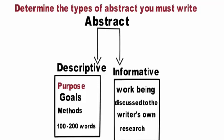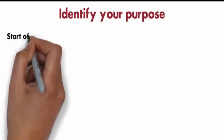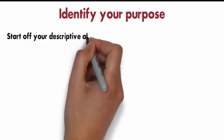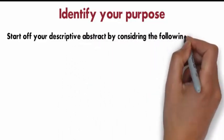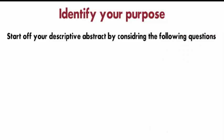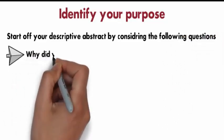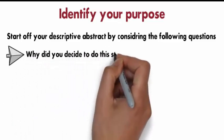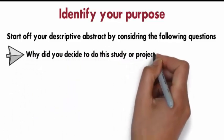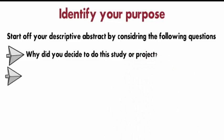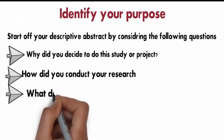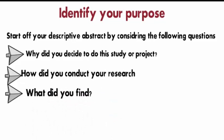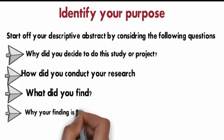Identify your purpose. You're writing about a correlation between lack of lunches in schools and poor grades. So what? Why does this matter? The reader wants to know why your research is important and what the purpose of it is. Start off your descriptive abstract by considering the following questions: Why did you decide to do this study or project? How did you conduct your research? What did you find? Why is this research and your findings important? Should someone read your entire essay?